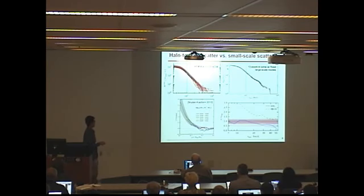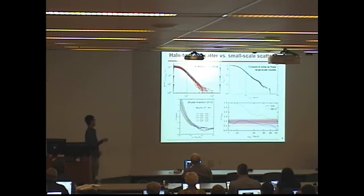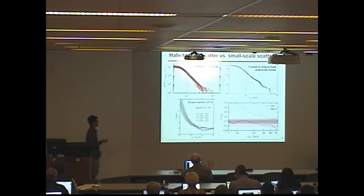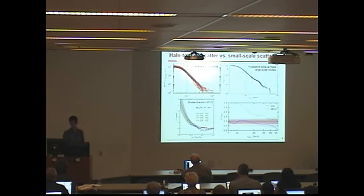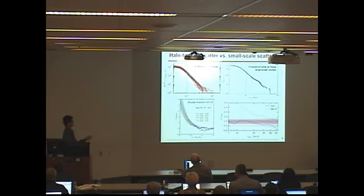Becker and colleagues in 2010 considered a mass bin and found the scatter is much larger than Poisson scatter. The basic conclusion is that this super-Poisson scatter is mostly coming from differences in concentration — or formation time — of halos in a given host halo mass bin. If you remove the formation time or concentration dependence, then you get small-scale scatter that is only Poisson.